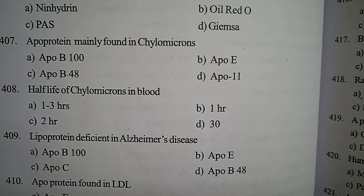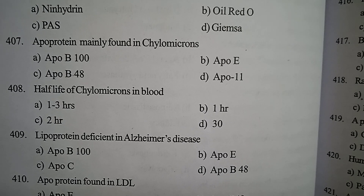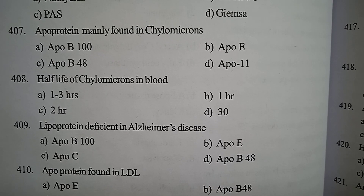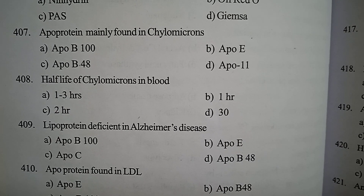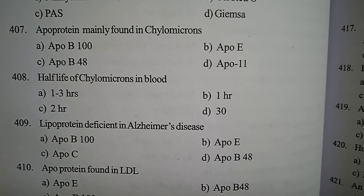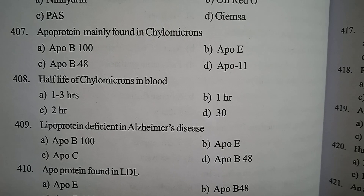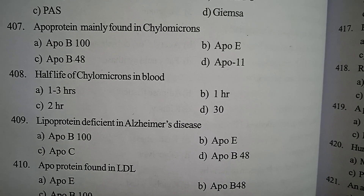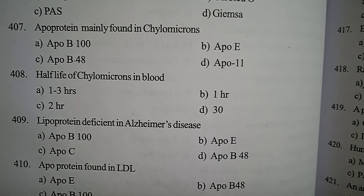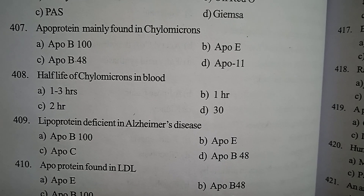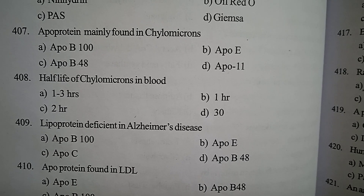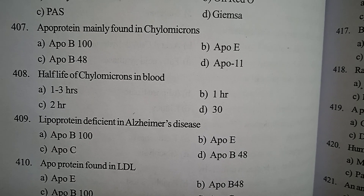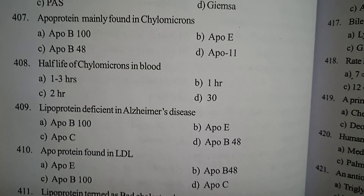Next one: lipoprotein deficient in Alzheimer's disease — option A ApoB-100, option B ApoE, option C ApoC, option D ApoB-48. Correct answer: option B, ApoE is deficient in Alzheimer's disease.